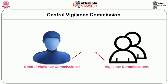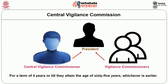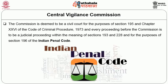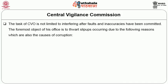The Central Vigilance Commissioner and the Vigilance Commissioners are appointed by the President for a term of four years or till they attain the age of 65 years, whichever is earlier. The Commission is deemed to be a civil court for the purposes of Section 195 and Chapter 26 of the Code of Criminal Procedure 1973, and every proceeding before the Commission is to be a judicial proceeding within the meaning of Sections 193 and 228, and for the purposes of Section 196 of the IPC. The task of the CVC is not limited to interfering after faults and inaccuracies have been committed.